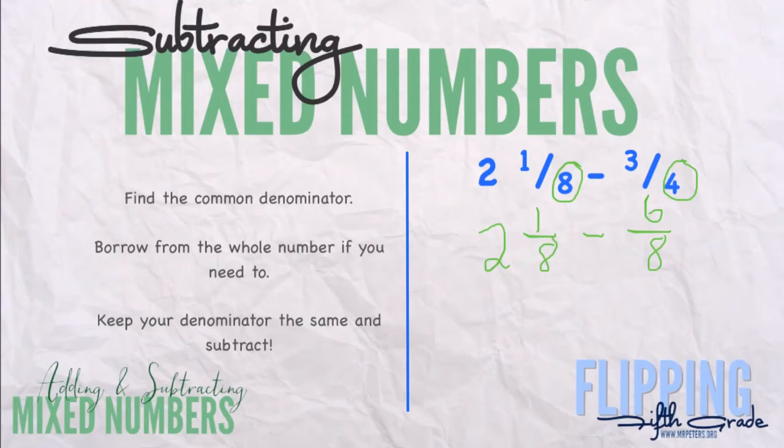So when you do this, we're going to borrow from the whole. We're going to make the 2 a 1. But now, since we borrowed 1 from the whole, we're technically borrowing 8/8. So my trick here is when you borrow, you make this one less and then add the denominator to the numerator. So this 1 becomes a 9.